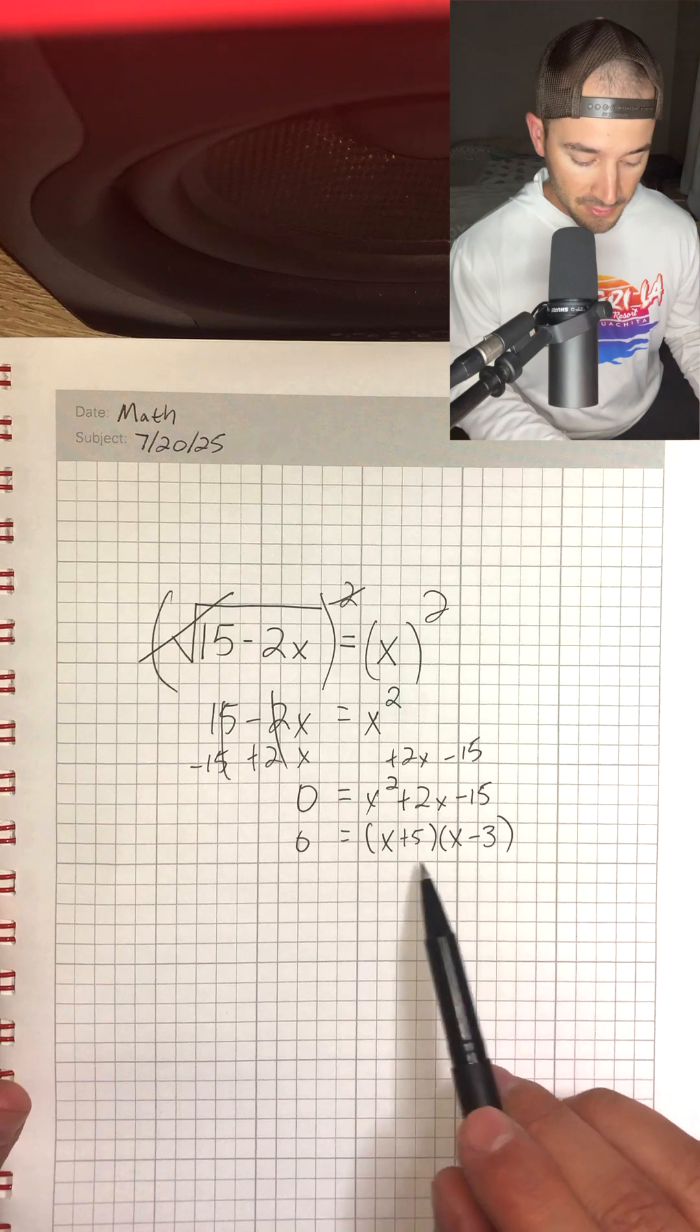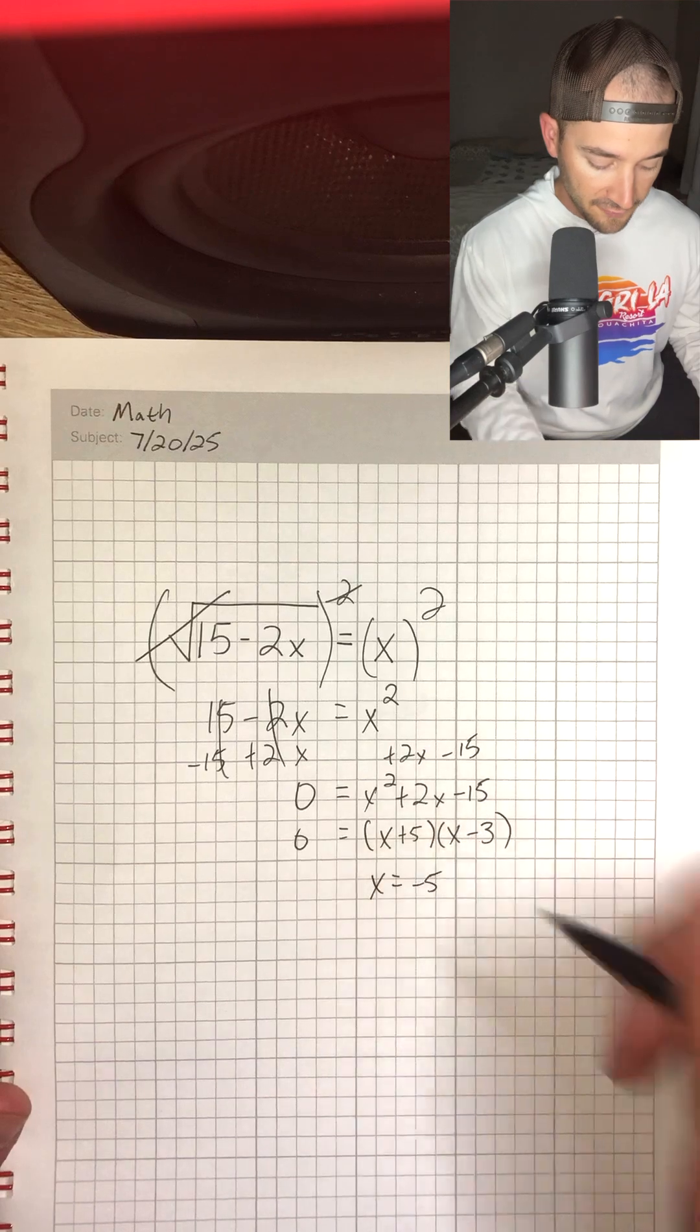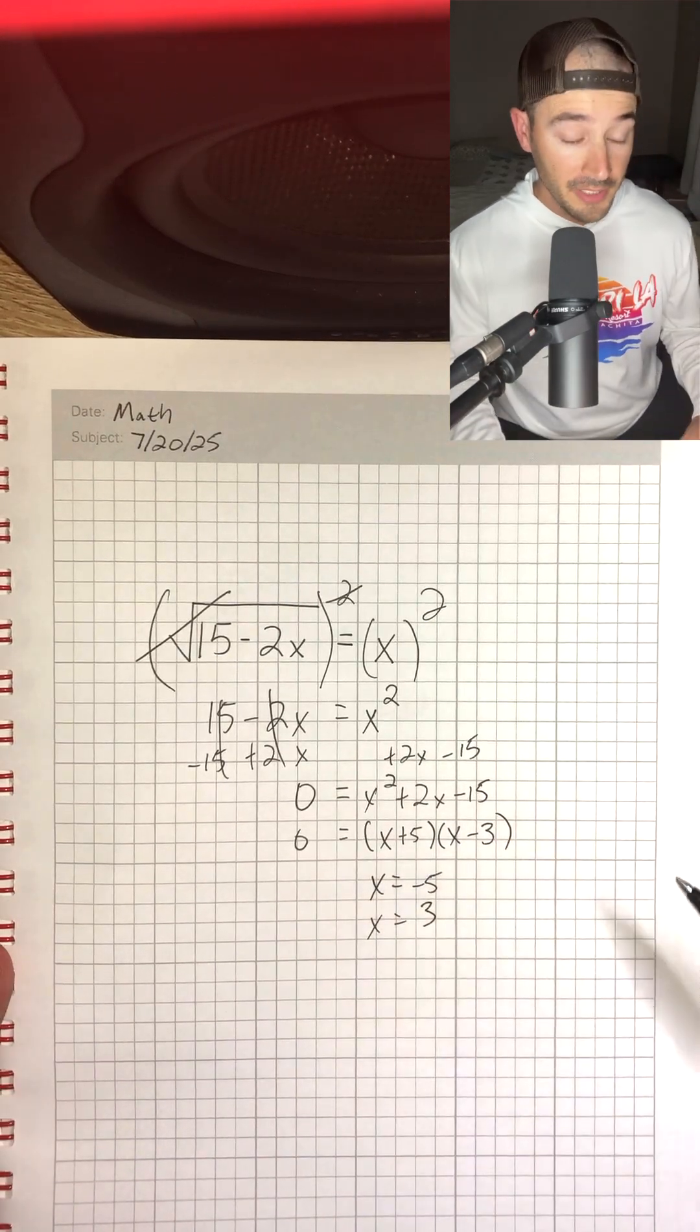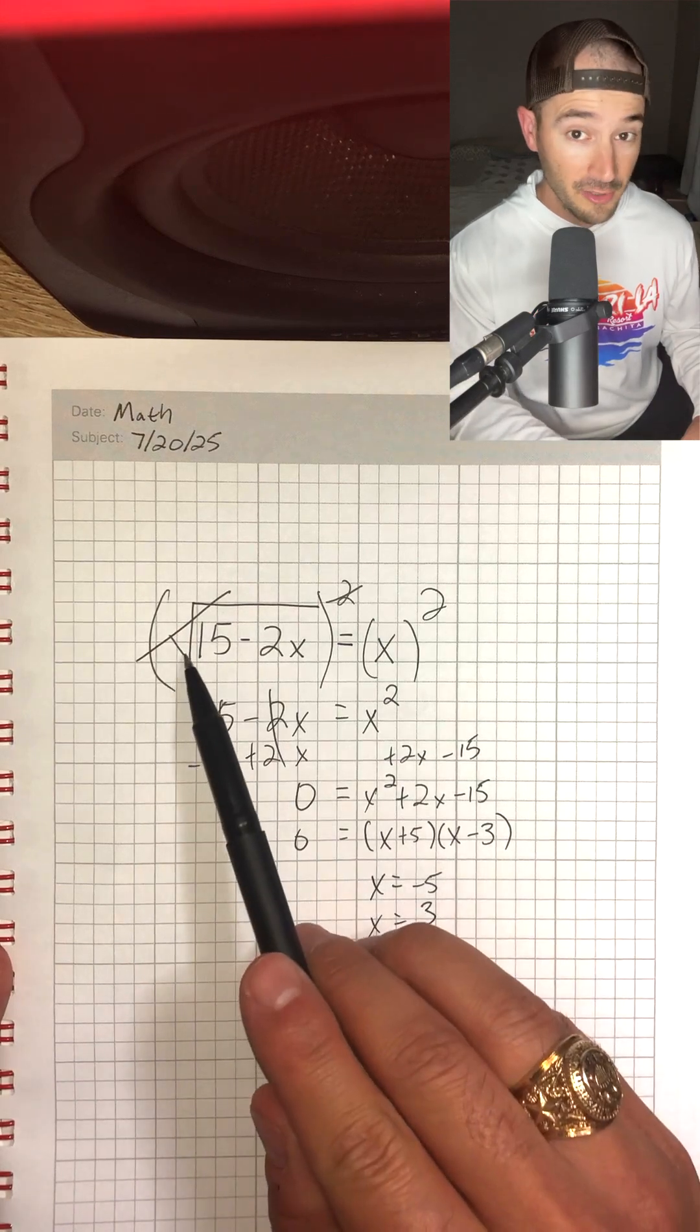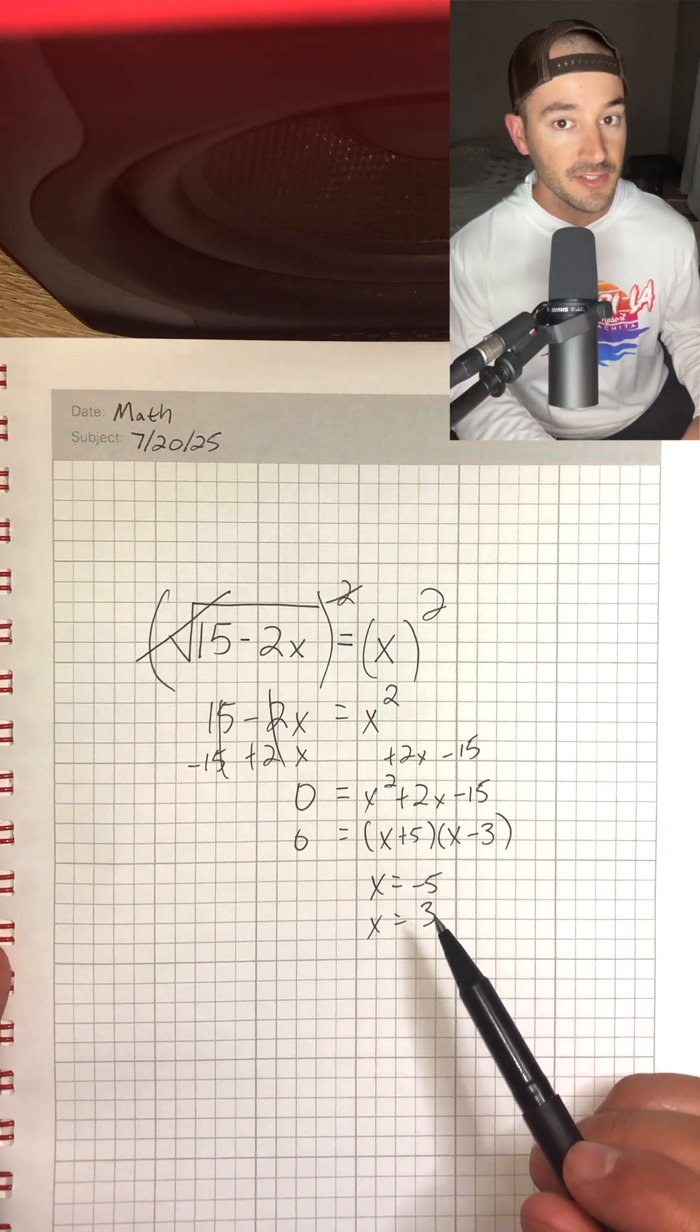That means we have two possible solutions that satisfy this equation. We would have x equals negative 5 and x equals positive 3. But because our original equation had a radical in it, we actually need to plug in both of these answers to see if we have any extraneous solutions.